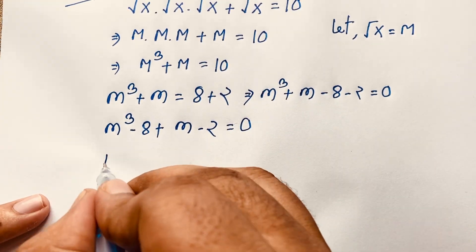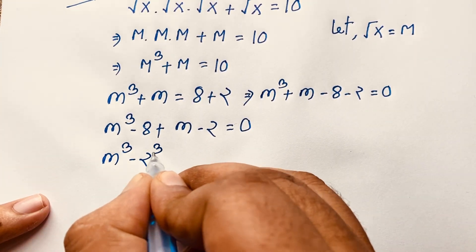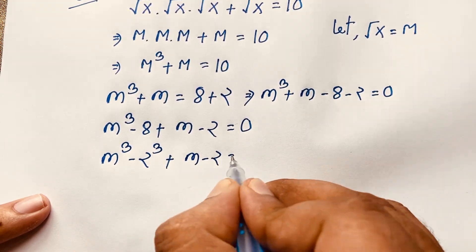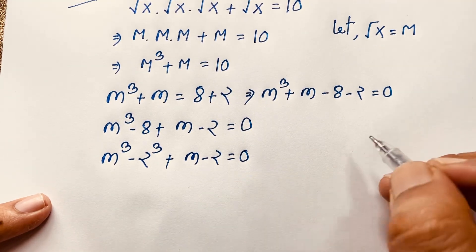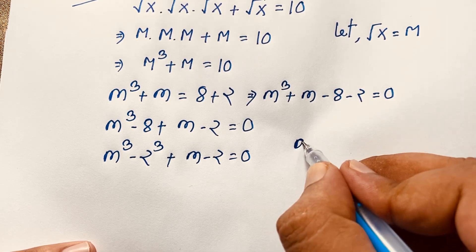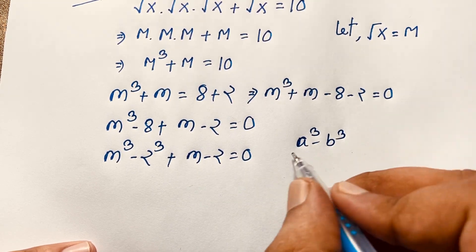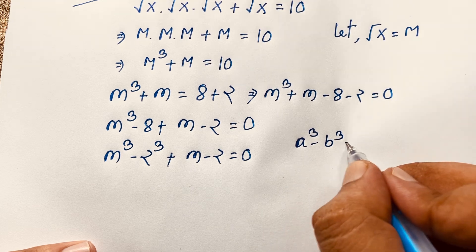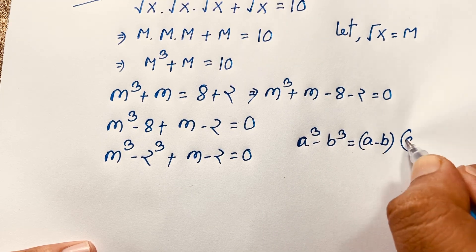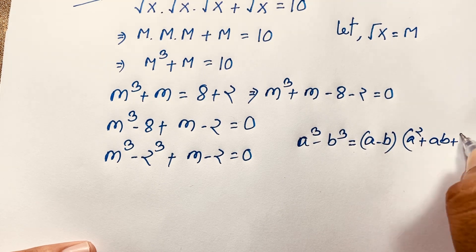Now I solve this step by step. I group m³ minus 8, and note that 2³ = 8. So m minus 2 is a factor. I apply the difference of cubes formula: a³ minus b³ equals (a minus b)(a² plus ab plus b²).